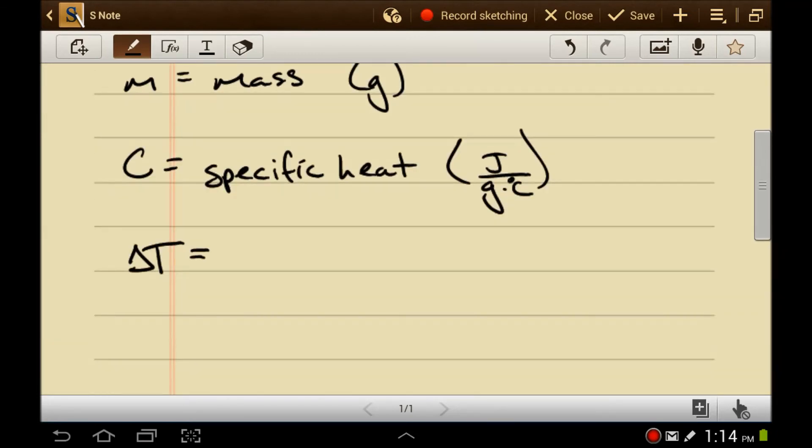The Greek symbol delta, the temperature change, is the final temperature minus the initial temperature. So you subtract the two temperatures and you see how much the temperature has changed. Temperatures have units of degrees Celsius or possibly Kelvin. Again, we're not using Fahrenheit because, no.